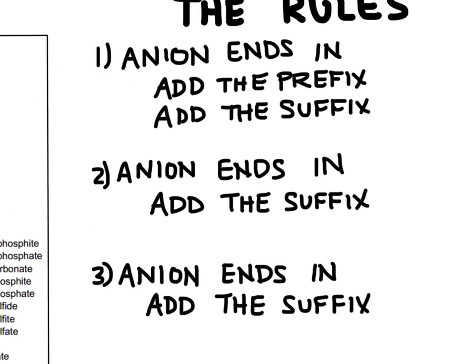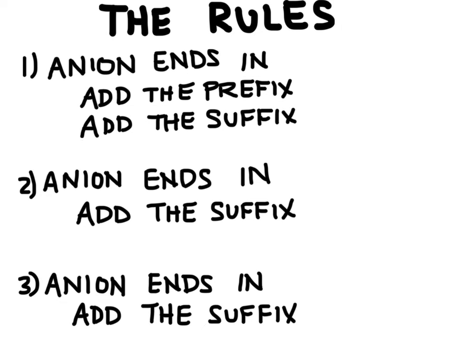So let's look at the three rules that we have to remember. We can start with the first one here. It says if the anion ends in ide, so that's any of the monatomic ions and then a few of the polyatomic ions, we're going to add the prefix hydro right on to the beginning of the name of the anion. And then we'll change the ending of the anion to ic. So we'll add the suffix ic.